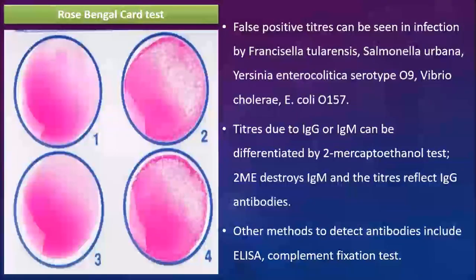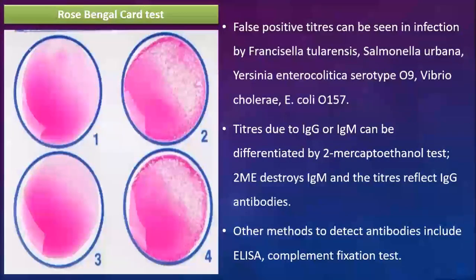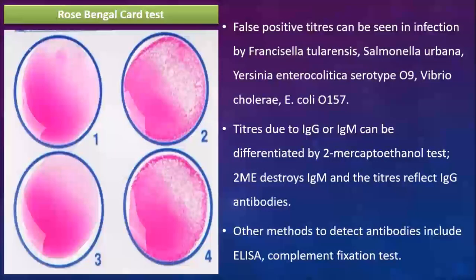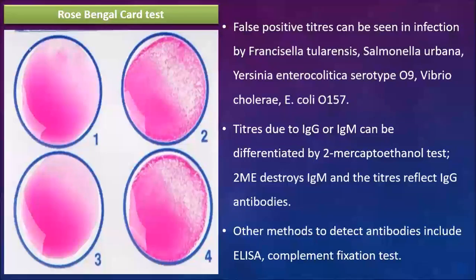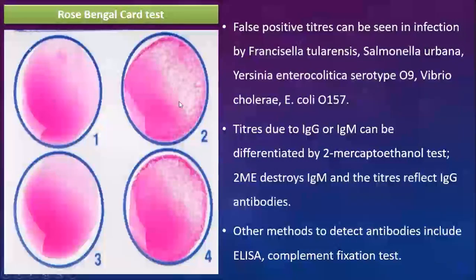The standard agglutination test also has false positive results, seen in patients infected by Francisella tularensis, Salmonella urbana, Yersinia enterocolitica serotype O9, Vibrio cholerae, and E. coli O157 due to antigen cross-reaction. IgG and IgM titers can be differentiated by the 2-mercaptoethanol test. Other methods of detecting antibodies include ELISA and complement fixation tests. The Rose Bengal card agglutination test is shown: negative (no clumping) versus positive (visible agglutination).